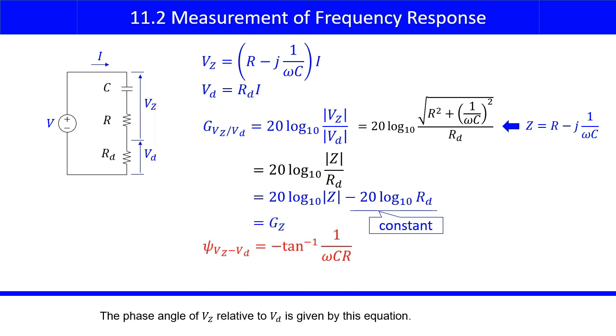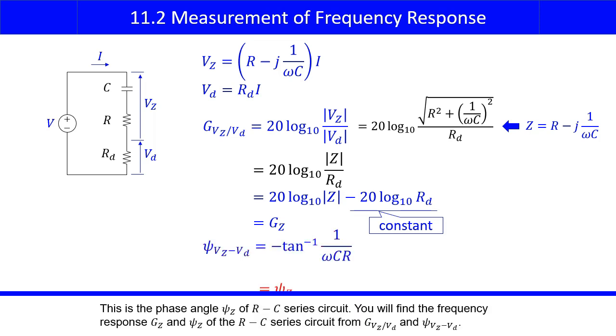The phase angle of VZ relative to VD is given by this equation. This is the phase angle psi Z of RC series circuit. You will find the frequency response GZ and psi Z of the RC series circuit from GVZ over VD and psi VZ relative to VD.